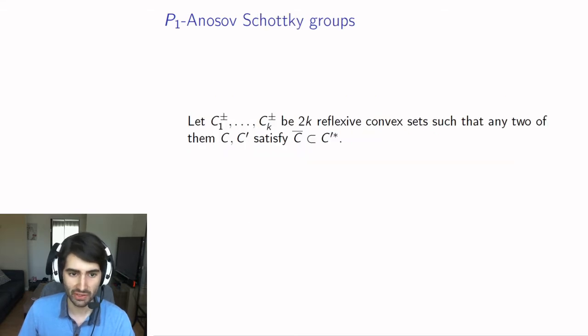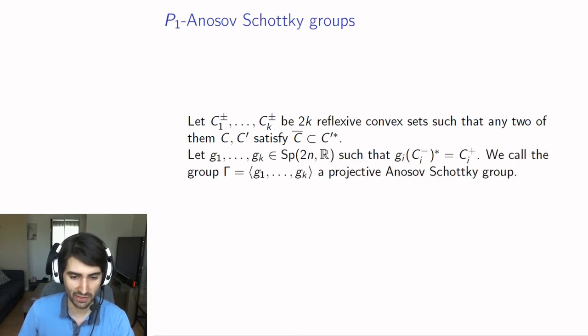Now we will take 2k reflexive convex sets, just like when playing regular ping pong. But instead of just asking them to be disjoint, we want to ask that any two of them, C and C prime, satisfy the condition that the closure of one is inside the dual of the other. Then you take group elements that map the dual of C i minus to C i plus, and you call the group generated by these things a projective Anosov Schottky group.